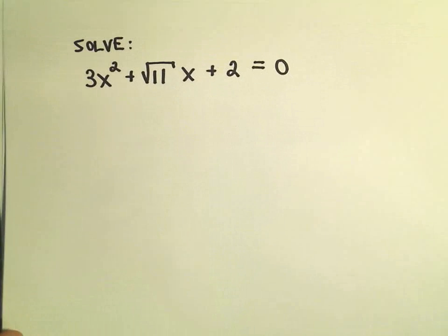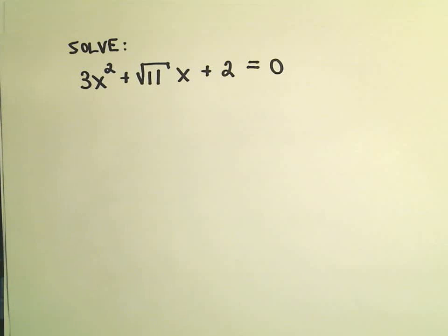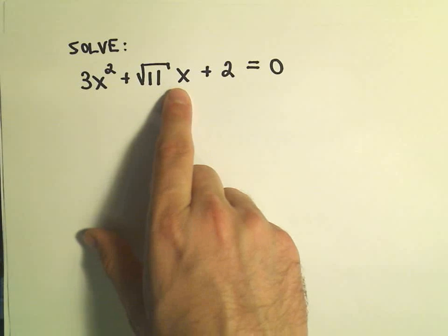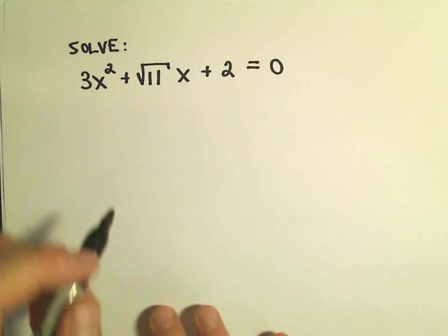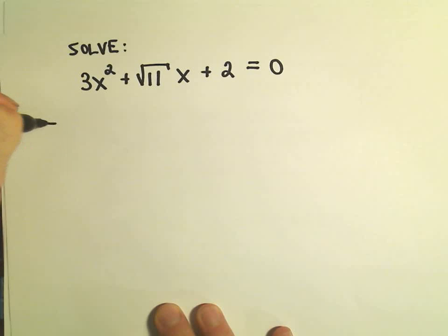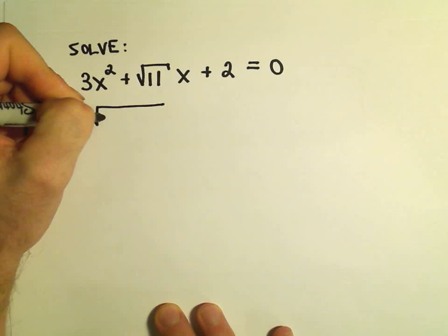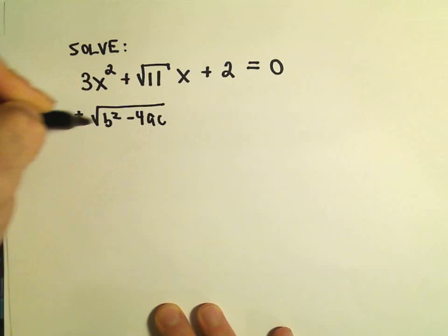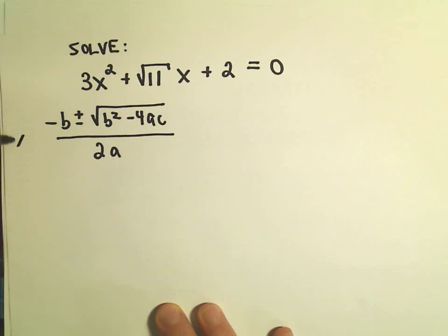In this problem, I'm going to solve the quadratic equation 3x squared plus the square root of 11 times x plus 2 equals 0. Our quadratic formula — negative b plus or minus the square root of b squared minus 4ac over 2a — will give us our solutions to this quadratic equation.